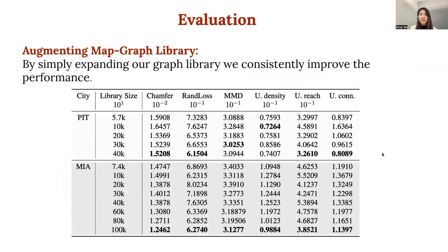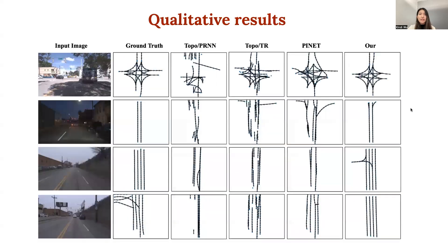As we grow the graph retrieval library, including maps without corresponding image views, we observe performance growing consistently with the size of the retrieval library. Here we show some qualitative results. From left to right, we have the input image, ground truth maps, maps generated by the baseline method, and in the last column, our method. As we can see, the retrieved maps with our method have the highest visual fidelity.